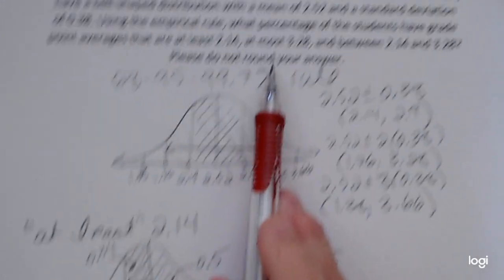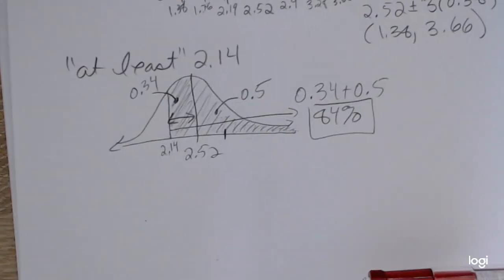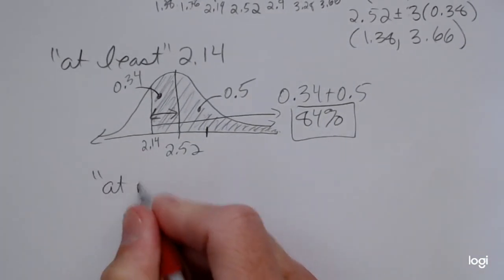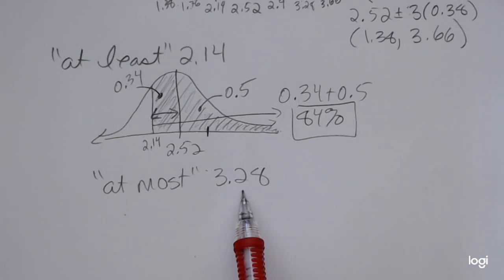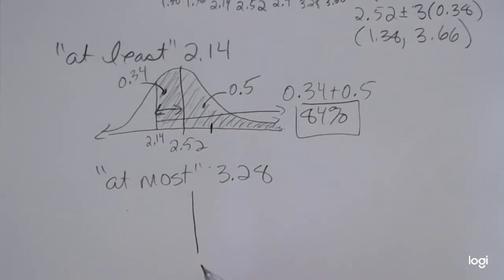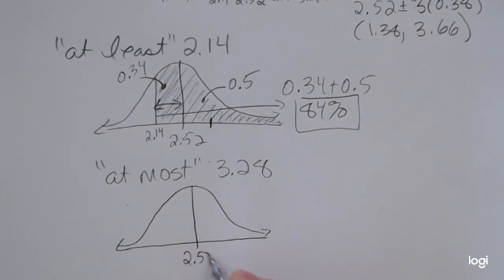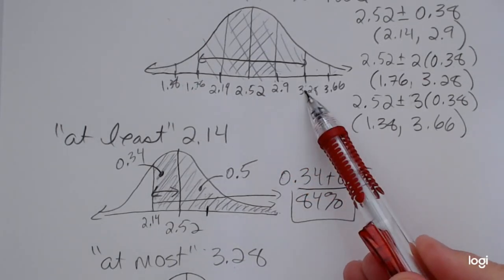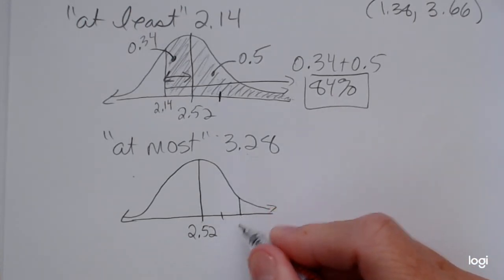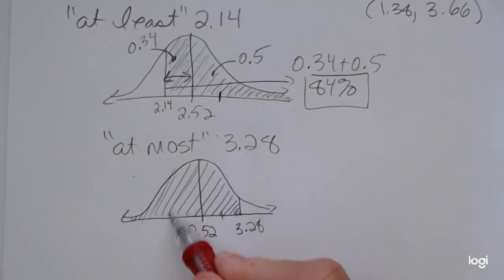The next part asks for 'at most 3.28.' 'At most' means the area to the left of that value — it can't be more than 3.28. Sketching this situation, 3.28 is clearly above the mean. Going back to the original bell, it's 2 standard deviations above the mean, so I shade everything to the left of 3.28.